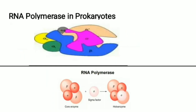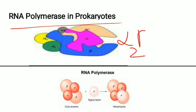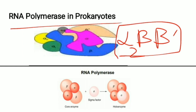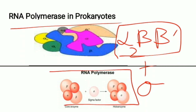The core enzyme of the prokaryotic RNA polymerase consists of 2 alpha subunits, beta, and beta-prime. When the sigma factor binds to it, it forms the holoenzyme.